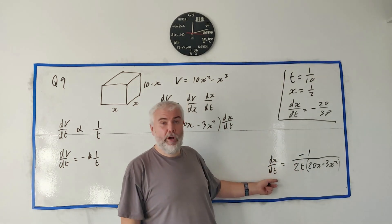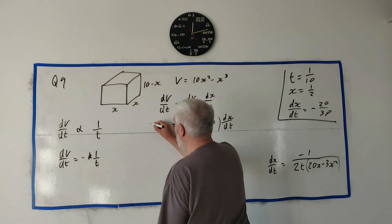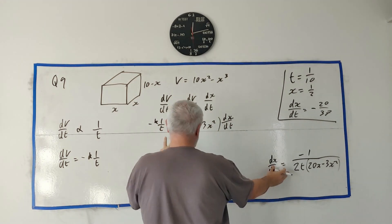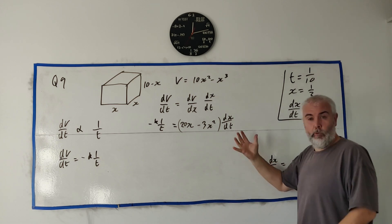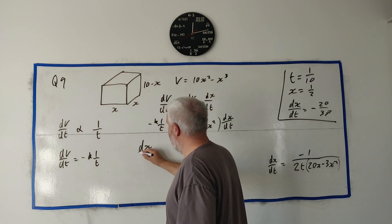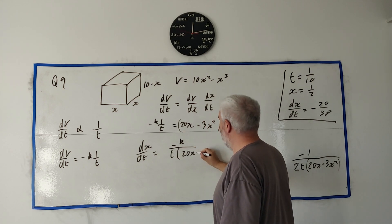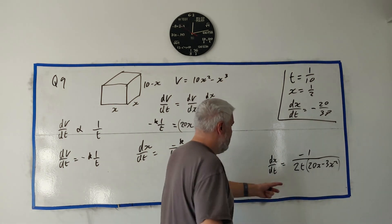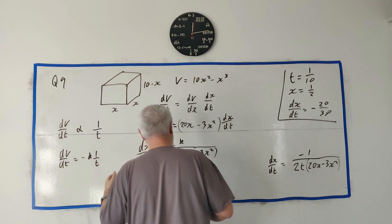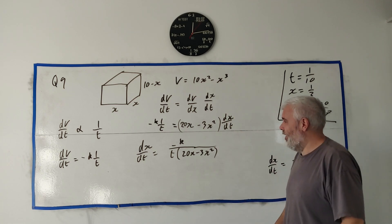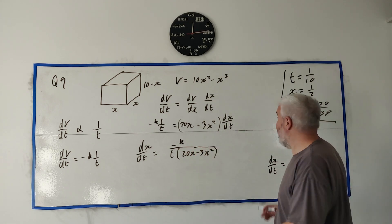We're never going to expand dx/dt because it appears in our answer. Setting the two expressions for dV/dt equal: (20x − 3x²) · dx/dt = −k/t. Dividing both sides by (20x − 3x²), we get dx/dt = −k / [t(20x − 3x²)]. That's pretty much the answer, except we still need to find k using the given values.